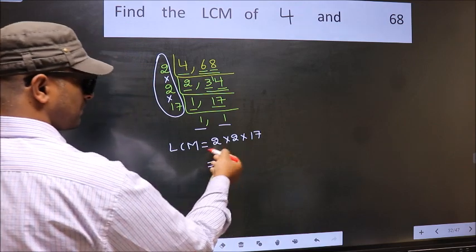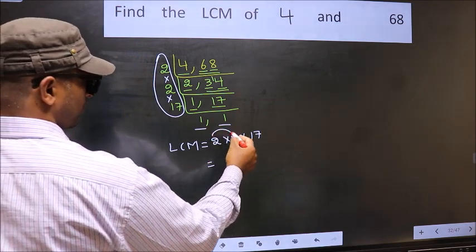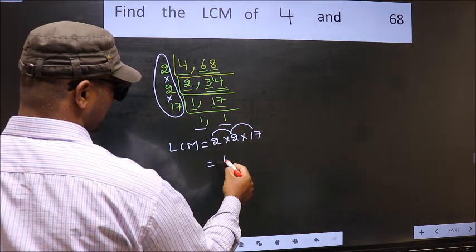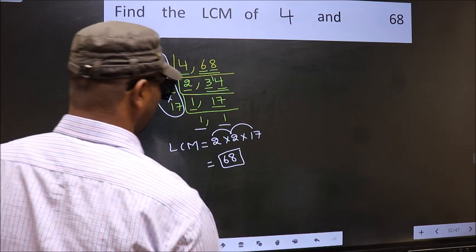So let us multiply these numbers. 2 into 2, 4 into 17, 68 is our LCM.